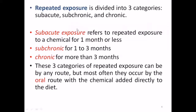Repeated exposure is divided into three categories: subacute, subchronic, and chronic. Subacute exposure refers to repeated exposure to a chemical for one month or less, while subchronic is for one to three months, and chronic for more than three months. These categories can occur by any route, but most often by oral route with the chemical added directly to the diet.